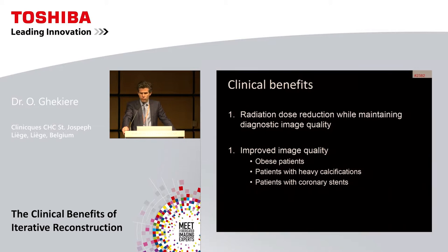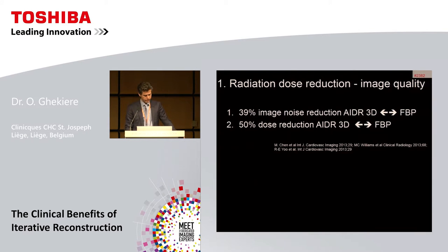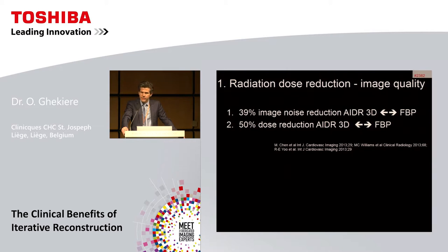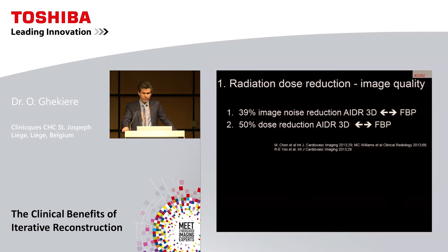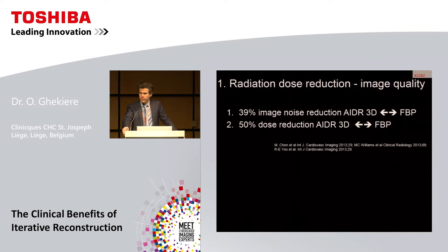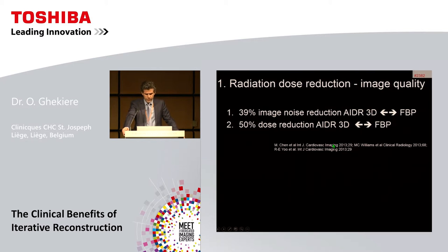Improved image quality can also be obtained through iterative reconstruction in specific patient population groups. Several studies have evaluated the relationship between radiation dose reduction, image noise, and image quality. A 39% reduction of image noise while maintaining the same image quality has been reported using iterative reconstruction compared to filter back projection. On the other hand, a dose reduction of up to 50% — or even up to 75% as reported by the previous speaker — has been reported while maintaining the same image quality using AIDR 3D reconstruction compared to filter back projection.